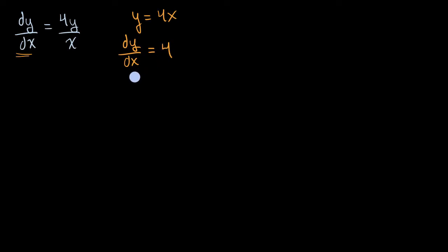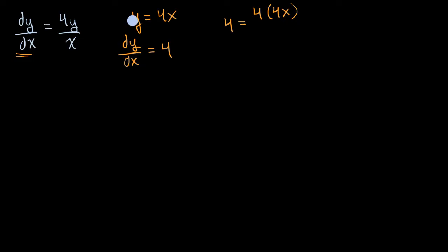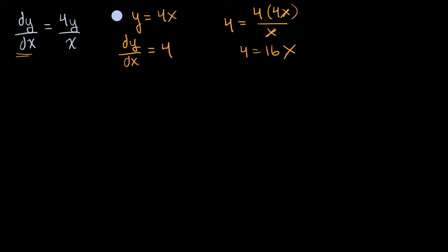First let's figure out the derivative of y with respect to x — that's just going to be equal to four. And so what we need to test is: is four, the derivative of y with respect to x, equal to four times y over x? Instead of y, let's write four x, putting everything in terms of x. So four times four x, all over x. That x cancels, and I get four is equal to 16, which it clearly is not. So this is not a solution to our differential equation.